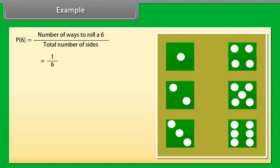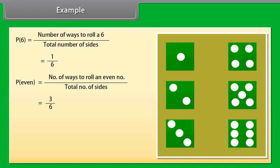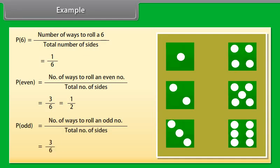Now we can see that the way to roll even numbers is 3. We can find the probability as P(even) is equal to number of ways to roll an even number upon total number of sides, which is equal to 3 upon 6, which is 1 upon 2. And way to roll odd number is 3, so the probability is P(odd) is equal to number of ways to roll an odd number upon total number of sides, which is equal to 3 upon 6, which is 1 upon 2.